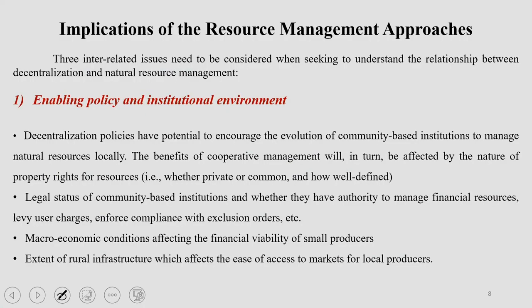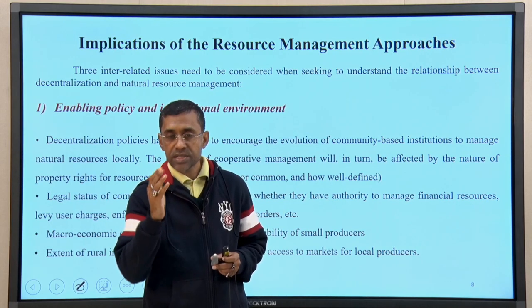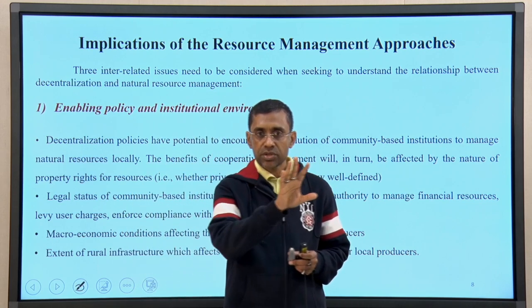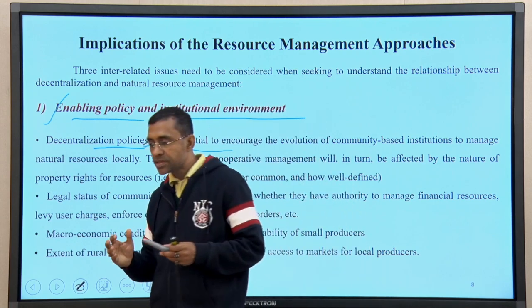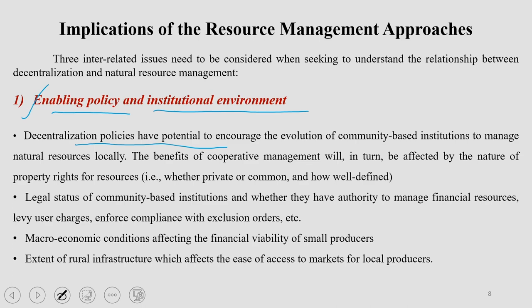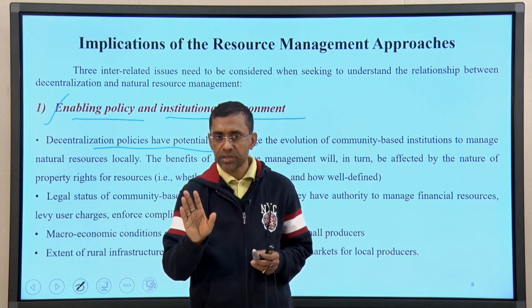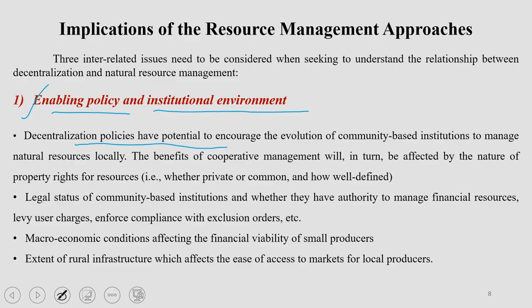There are three interrelated issues to consider when understanding the relationship between a decentralized system and natural resource management. The first is an enabling policy and institutional environment. A helpful policy and good institutional support are very important for resource management. Decentralized policies have the potential to encourage the evolution of community-based institutions and encourage participation of the community and local people. The benefits of cooperative management will be affected by the nature of property rights over various resources. The legal status of community-based institutions like self-help groups, farmer producer companies, and water user groups — whether they have authority to manage financial resources — also needs to be evaluated. Macroeconomic conditions affecting the financial viability of small producers also need to be checked. Rural infrastructure is another critical aspect, as it affects access to various resources. Even if resources are available and ready for utilization, lack of appropriate access means the community would be deprived of utilizing those resources.